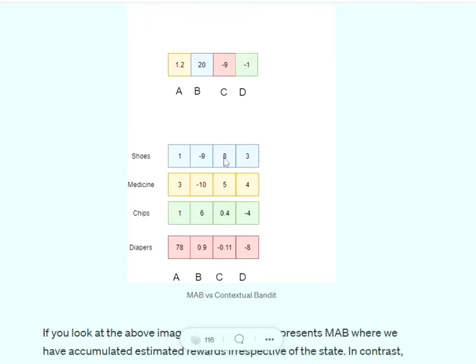You can see that when the context is shoes, C is the preferred product. When medicine is the context, then again C is preferred. When chips is the context, B is preferred, and when diapers, then A.